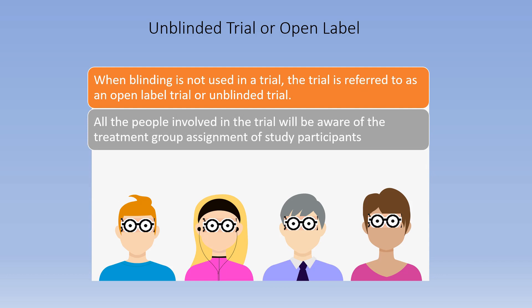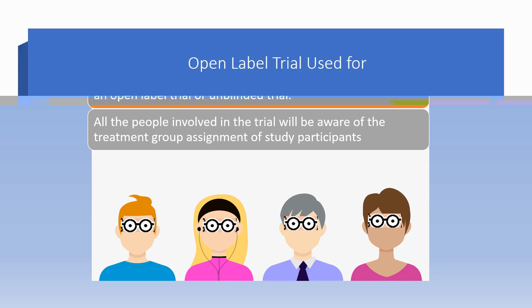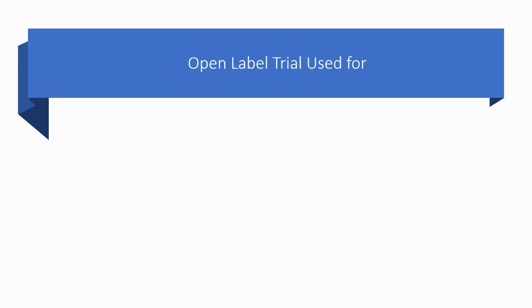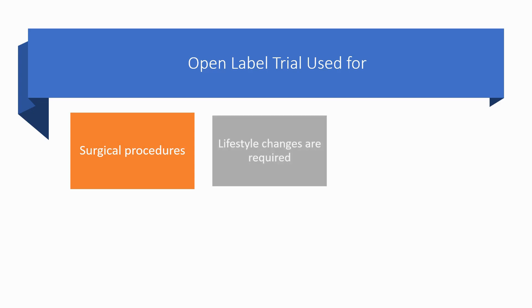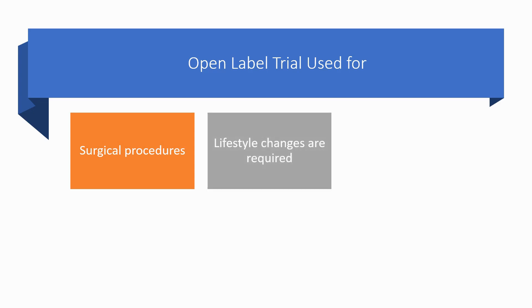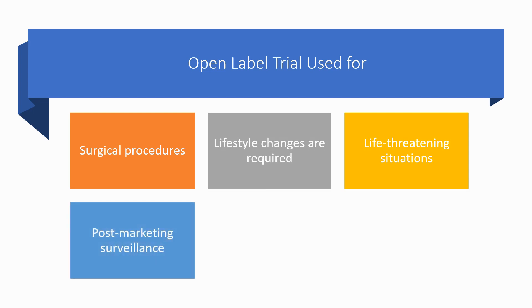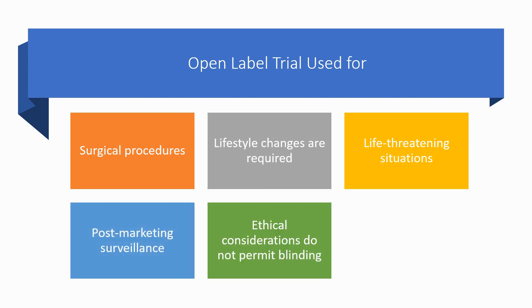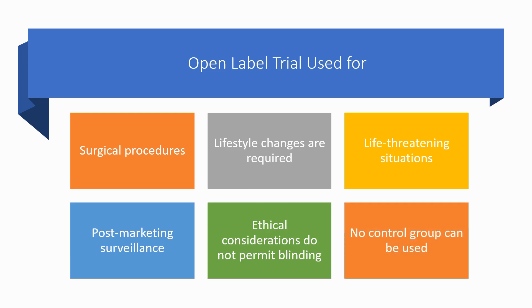In an open-label trial, all people involved will be aware of the treatment group assignment of study participants. Open-label trials can be used for surgical procedures, when lifestyle changes are required, in life-threatening situations, for post-marketing surveillance, when ethical considerations do not permit blinding, and if no control group can be used.